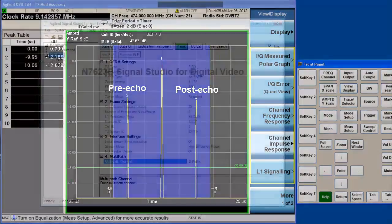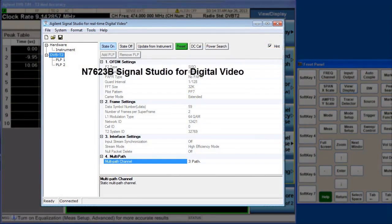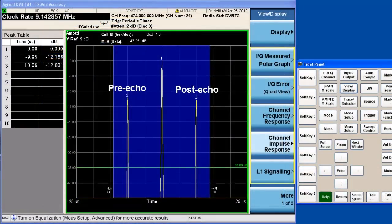In this demo, these echoes are added using the N7629B Signal Studio for digital video software. The relative delay and the power level of each of the echoes are set properly. We can see channel impulse response result on the MXA.